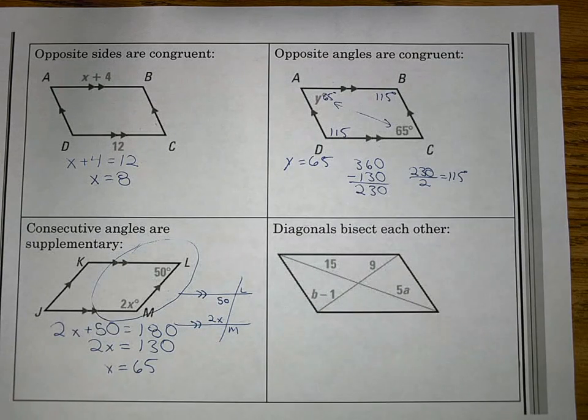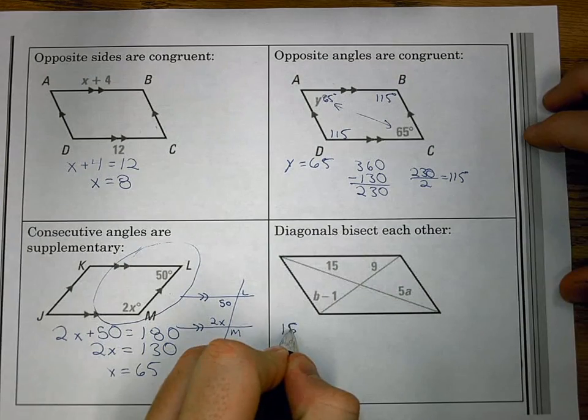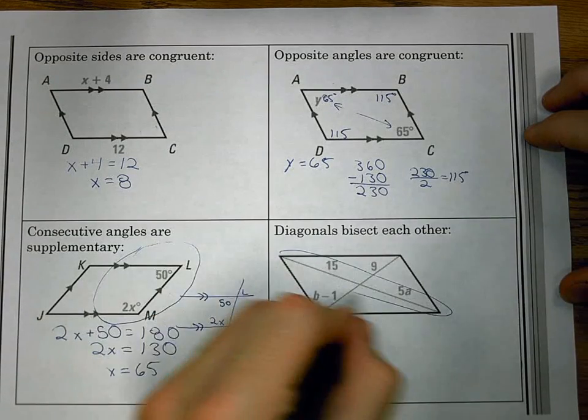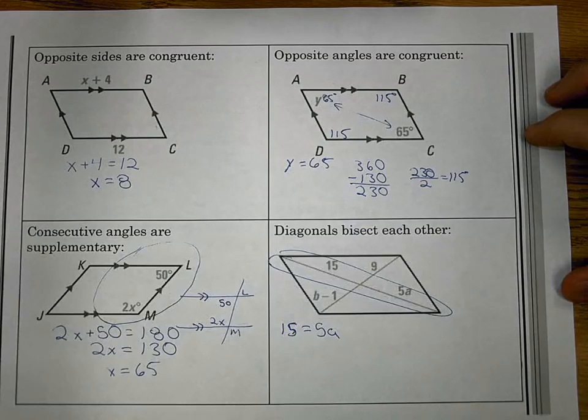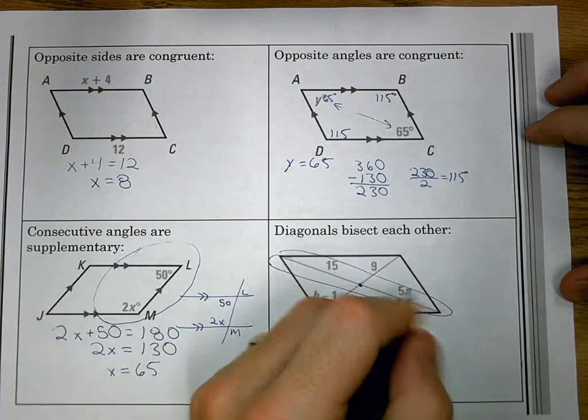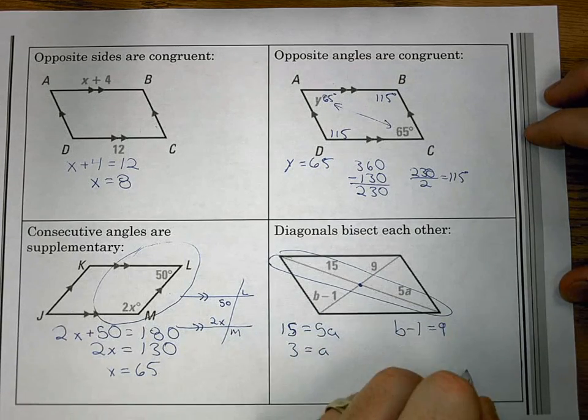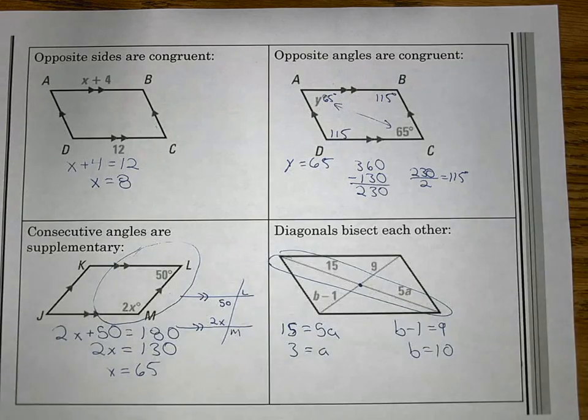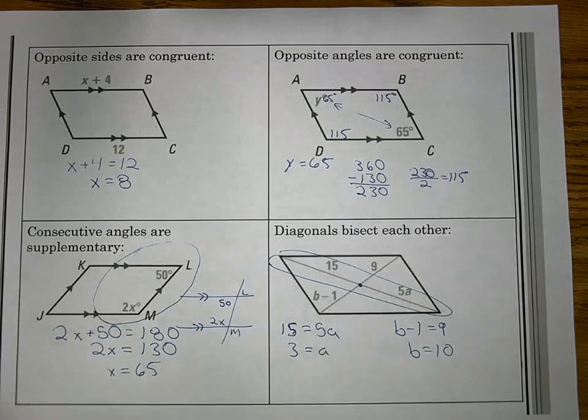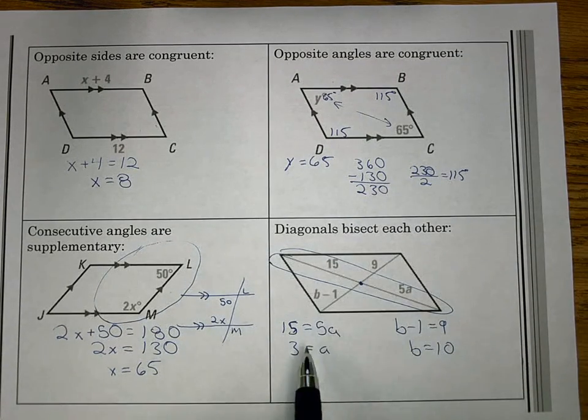Our last one looks at the diagonals. The key thing for the diagonals bisect each other is, honestly, get the setup correctly. The diagonal that is bisected needs the parts equal to each other. So 15 equals 5a is how I'm going to set it up, because they come from the same diagonal. That point is the midpoint. Those parts are equal. So a is 3. And then I can say b minus 1 equals 9, and b equals 10. Get that setup right. For all of these problems, it comes down to the setup. Pick the right ones that match up.